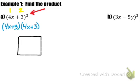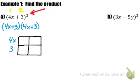So here's our Punnett square — we have a box with four cells. We make sure we have our 4x plus 3. We're going to write down our first term 4x and then our positive 3 along the left side. Along the top will be our second binomial 4x plus 3, so we have 4x here and 3 here.